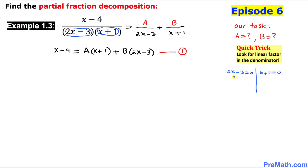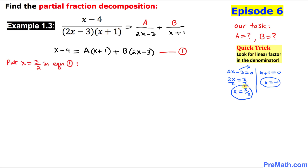Setting (2x minus 3) equal to zero gives us 2x equals 3, so x equals 3 over 2. Setting (x plus 1) equal to zero gives us x equals negative 1. Now let's substitute x equals 3 over 2 into equation number 1.